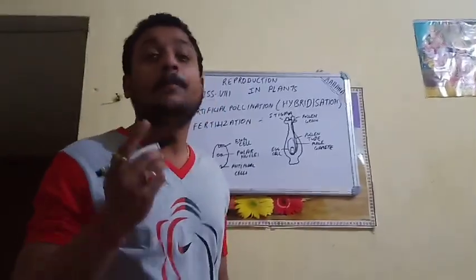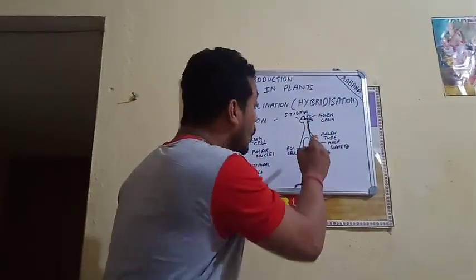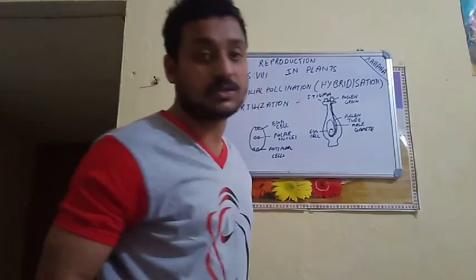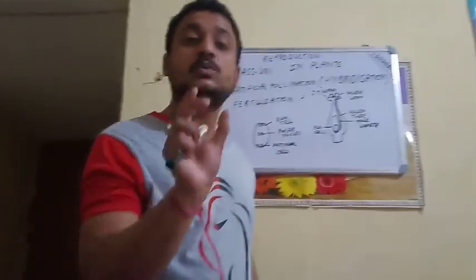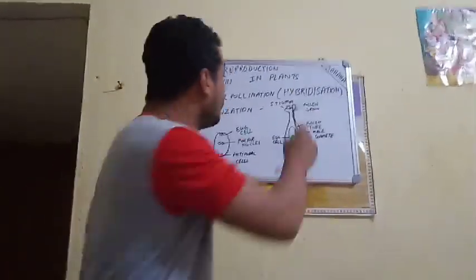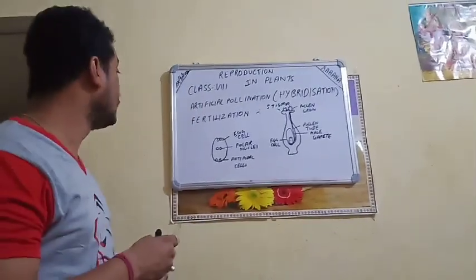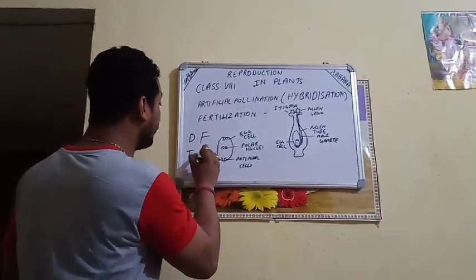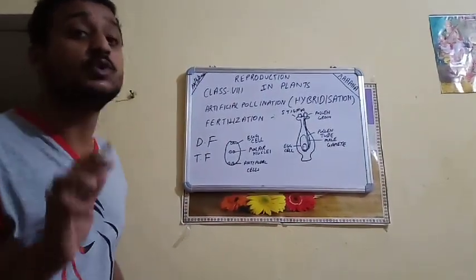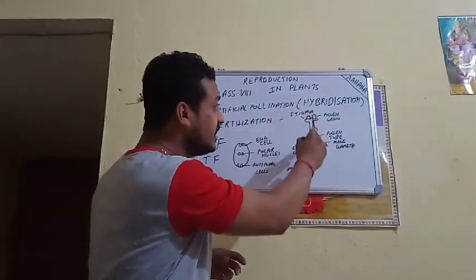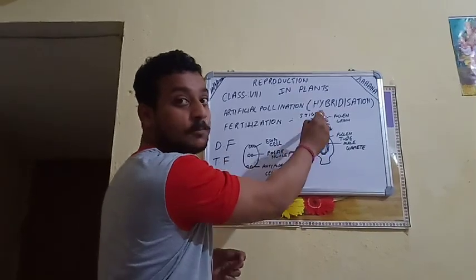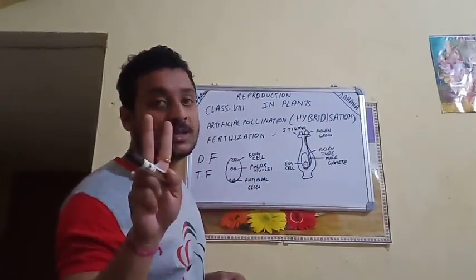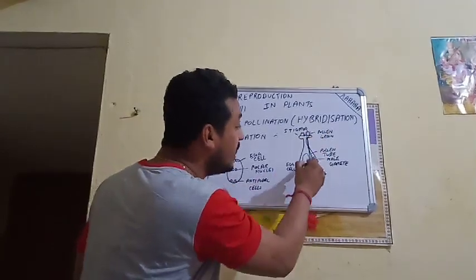The male gamete present in the pollen tube will slowly enter the ovary of the female reproductive part. There, the male gametes will be introduced into the female ovary by the help of the pollen tube. The pollen tube will carry two male gametes, and these two male gametes will slowly enter the ovary where the process of fertilization will take place.